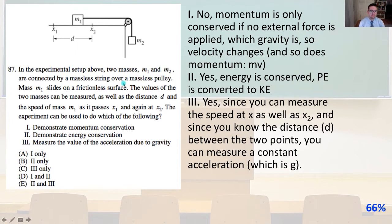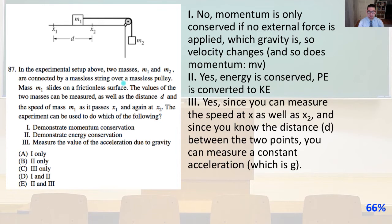Number 87. Two masses m1 and m2 are connected by a massless string over a massless pulley; m1 slides on a frictionless surface. The experiment measures masses, distance d, and speed at x1 and x2. Momentum is not conserved since gravity is an external force. Kinetic energy is conserved — potential energy converts to kinetic energy. And since you can measure speed at x1 and x2 and know distance d, you can measure constant acceleration g. That is answer E.